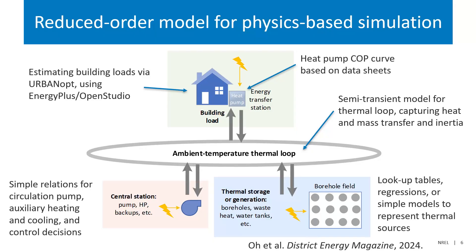On the reduced order side, this is for capturing the physics of what's actually happening on the loop: where is heat moving over time, where is water moving, and how much electricity is being used for that whole process. The main backbone of this model is the ambient temperature loop. A lot of the modeling effort goes into capturing how heat moves physically around this loop, how much thermal inertia is in there — so if you dump in some heat, how quickly it changes temperature and propagates around the loop affecting all customers.